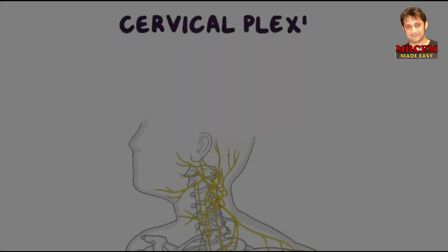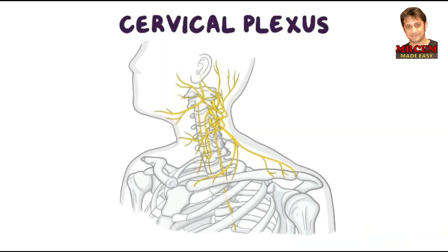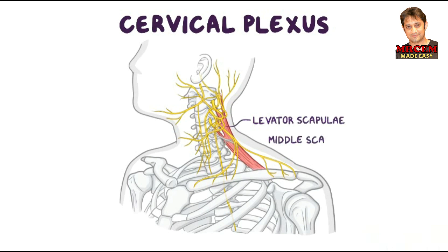The cervical plexus is an important plexus of nerves which provide innervation to the head and neck. This plexus is located anteromedial to the levator scapulae and middle scalene muscles and deep to the sternocleidomastoid, or SCM.